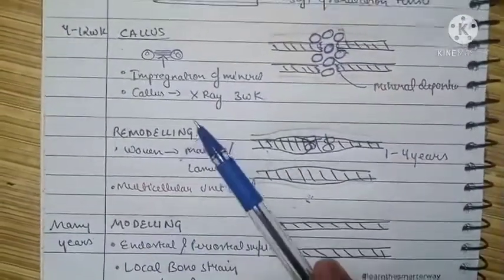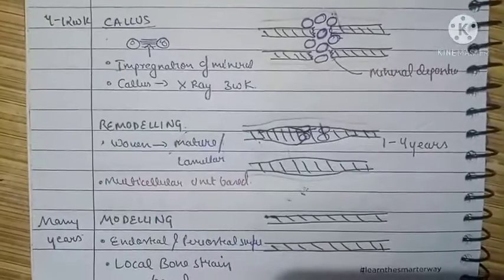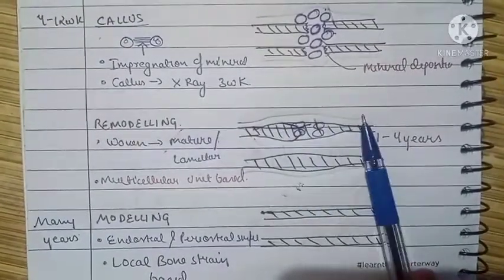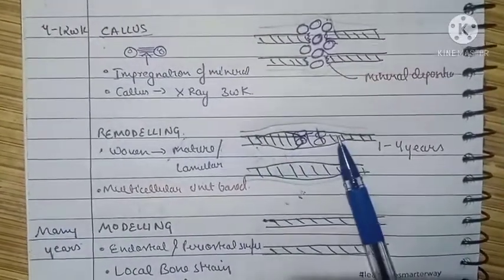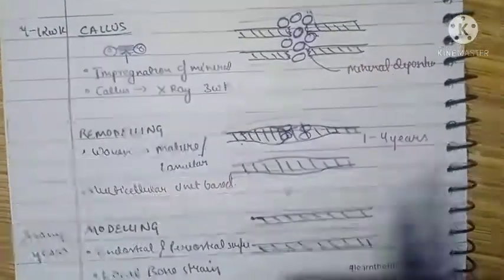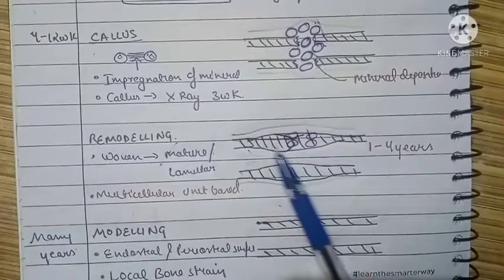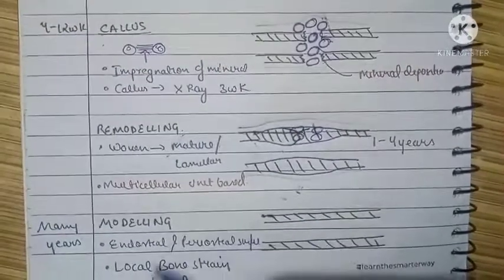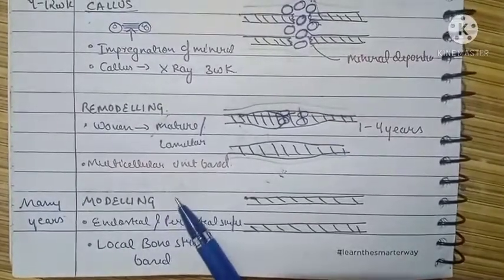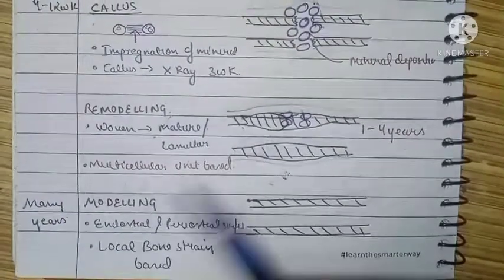The last stage is stage of modeling, which earlier was known as remodeling. Now we have bone that is healed, but still the bone is not symmetrical to the part of bone which is not fractured. There are elevations in the endosteum as well as periosteum.